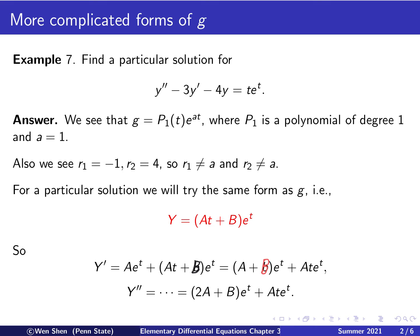Then we differentiate y' one more time to get y''. Applying the product rule again and collecting like terms, we reach y'' = (2A + B)e^t + At·e^t.